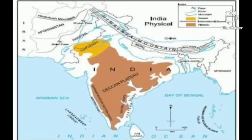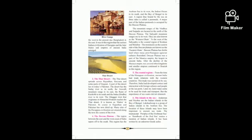Our next region is the plains of the Sindhu, Ganga, and Brahmaputra rivers and their tributaries. This region extends from Sindh and Punjab in the west to present-day Bangladesh in the east. The earliest Harappan civilization flourished on the banks of these rivers. Not only this, but even the states and empires of ancient India emerged here.